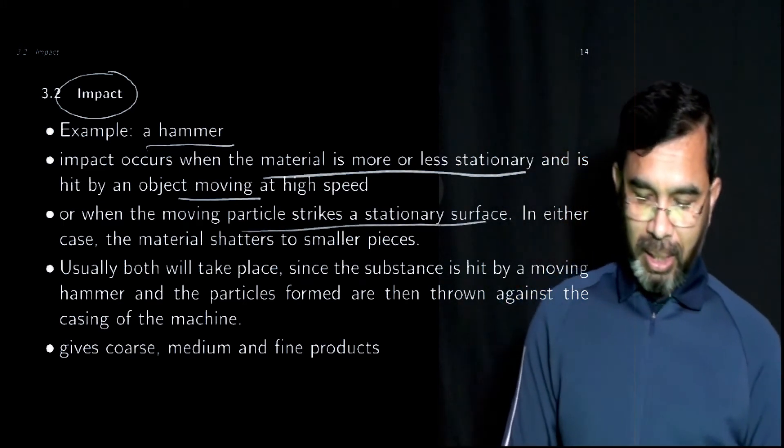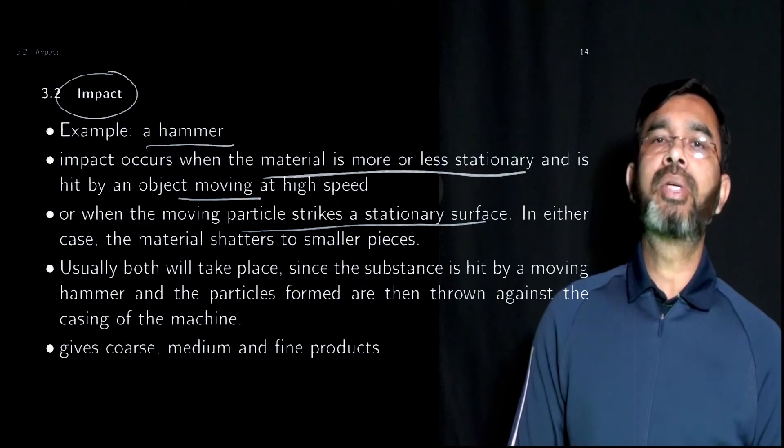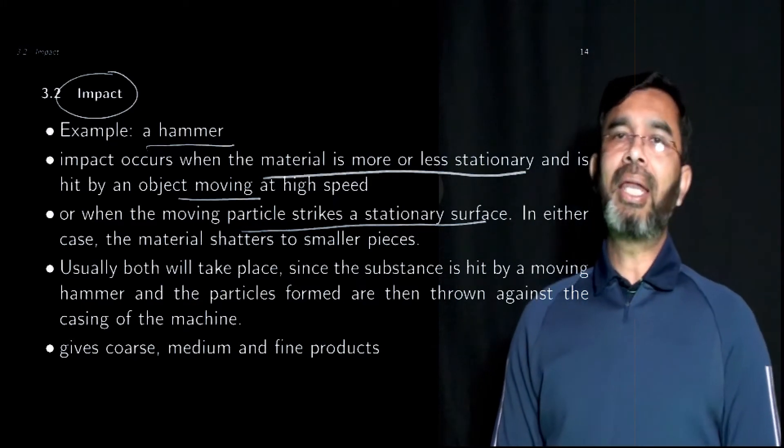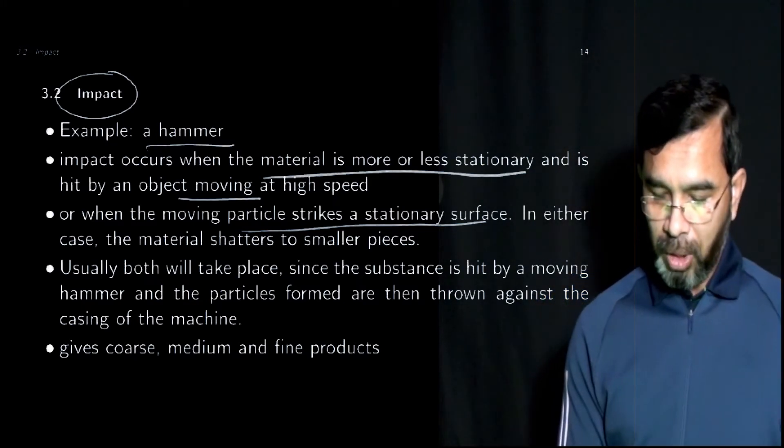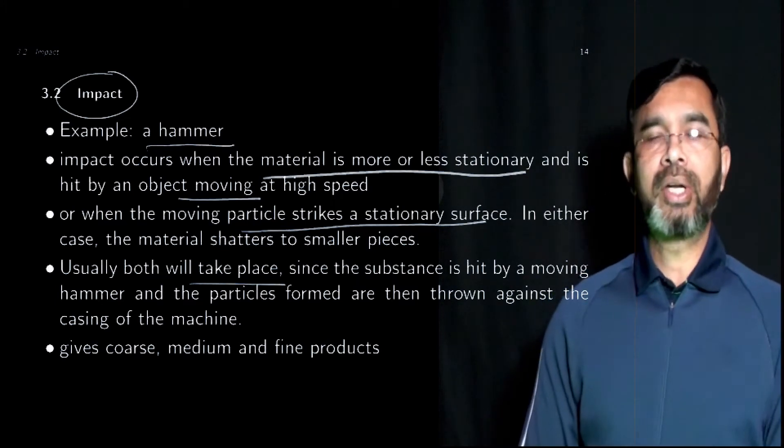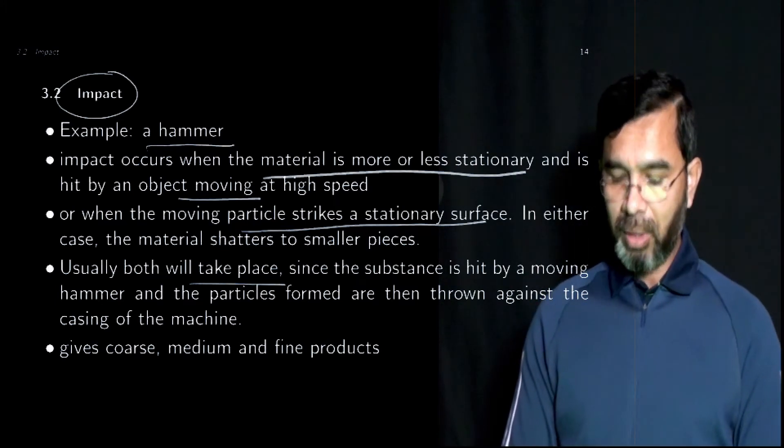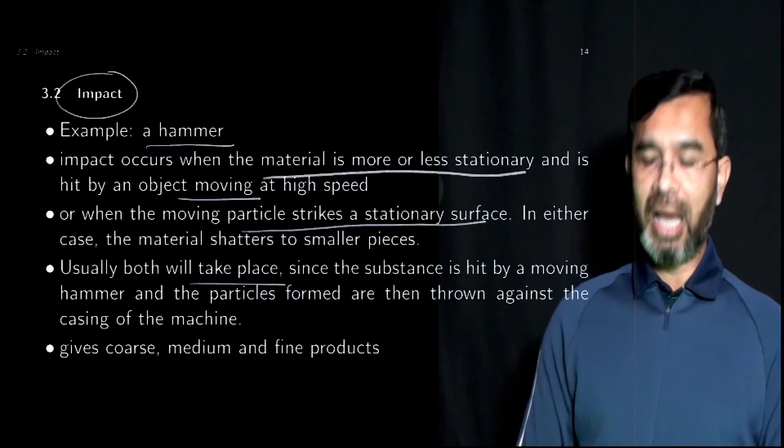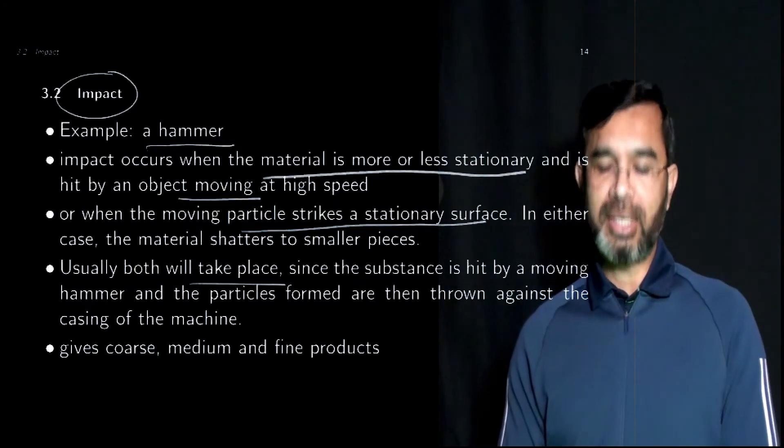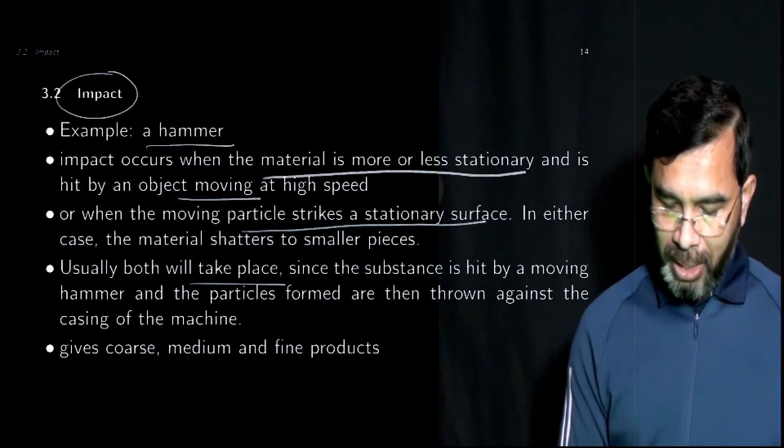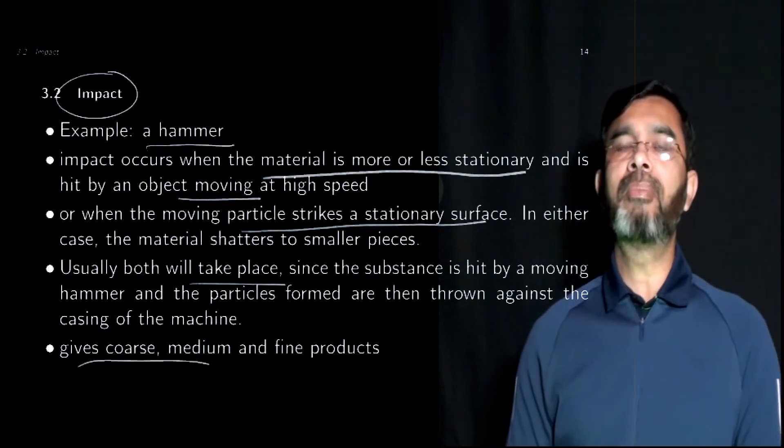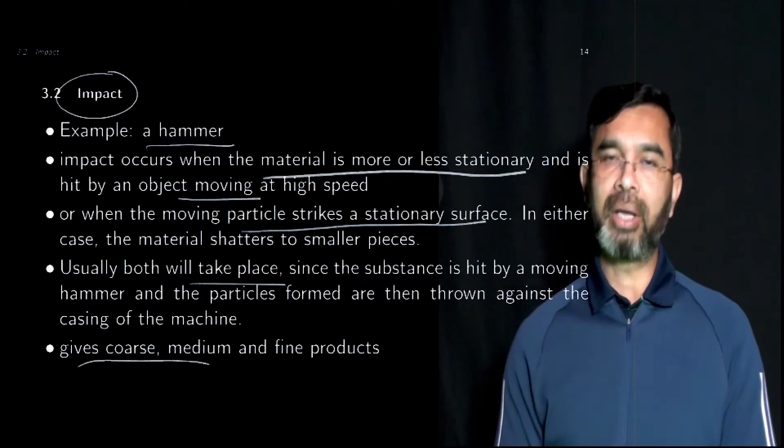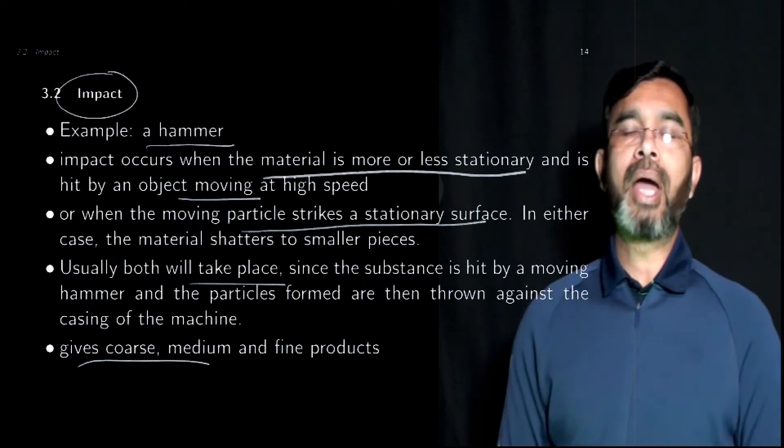Also, when the particle strikes against a stationary surface it shatters into small pieces. Typically in equipment both of these take place - a stationary surface hits the particles, and when the particles are broken into pieces those small pieces hit other surfaces. In both ways the size reduction takes place, typically giving coarse, medium, and fine particles.